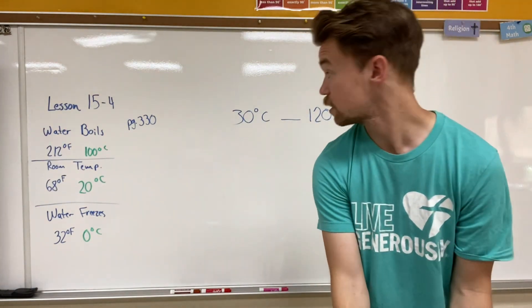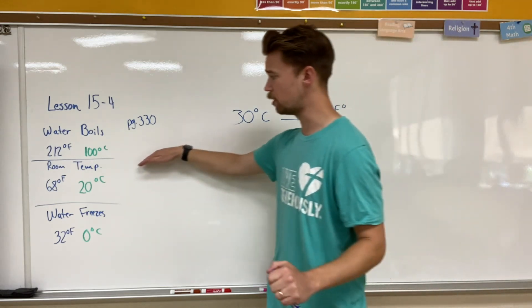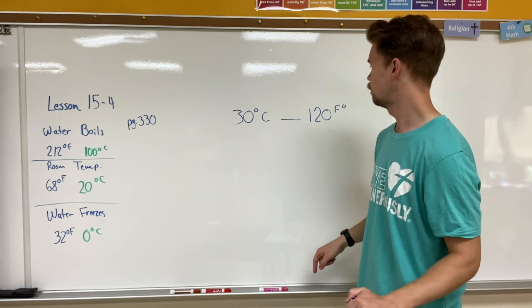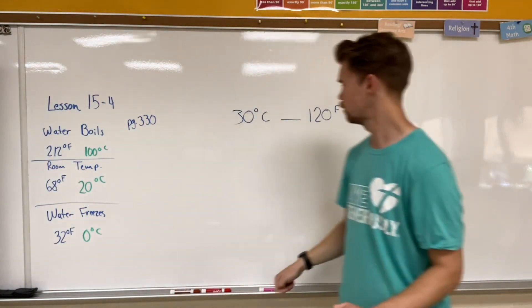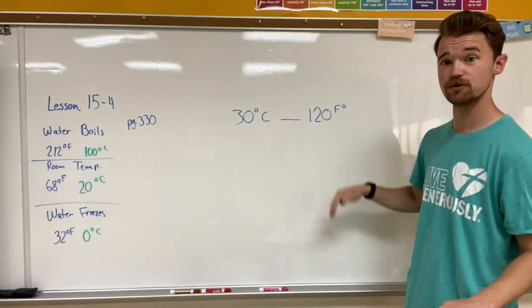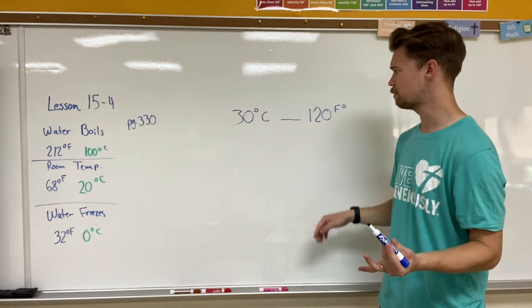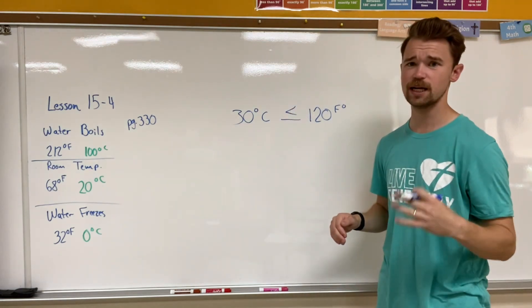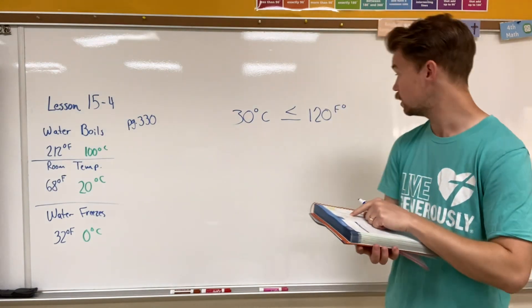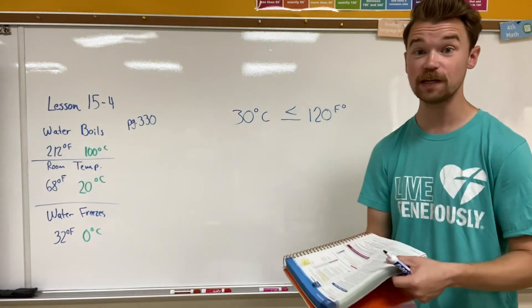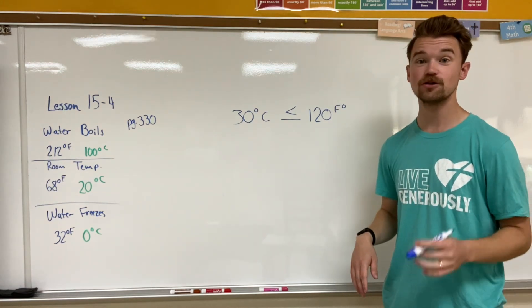The first thing we're going to do is compare 30 degrees Celsius to 120 degrees Fahrenheit. 30 degrees Celsius is a little warmer than the 20 degrees Celsius of room temperature. 120 degrees Fahrenheit would be almost double that amount. So 120 degrees Fahrenheit is greater than 30 degrees Celsius. Checking on page 330, 120 degrees Fahrenheit is actually a little below 50 degrees Celsius, which confirms our answer. Using the reference checkpoints wasn't bad, but I used page 330 to double-check my work.